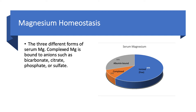Magnesium, like calcium, has three states. About 60% is free magnesium, also called ionized magnesium. 10% is complexed to anions — bicarbonate, citrate, sulfate, or phosphate — and 30% is bound to albumin. This is similar to calcium, which has about half ionized, about 42% albumin-bound, and about 7% complexed.